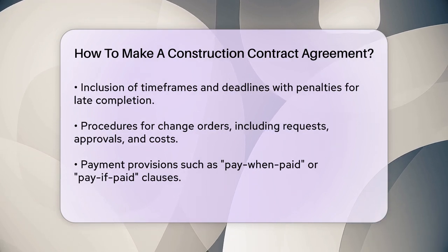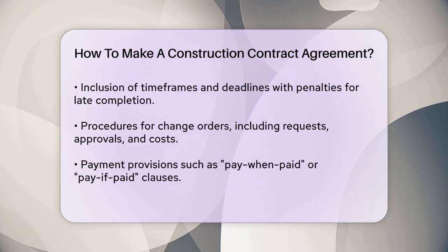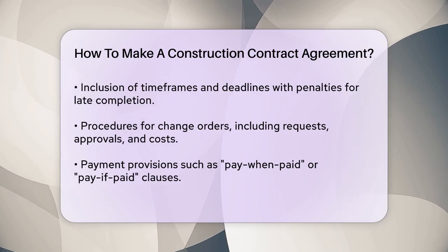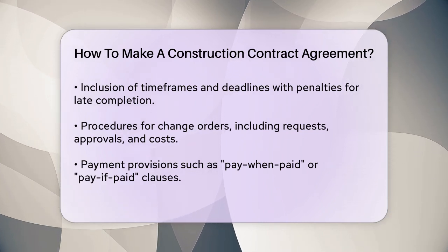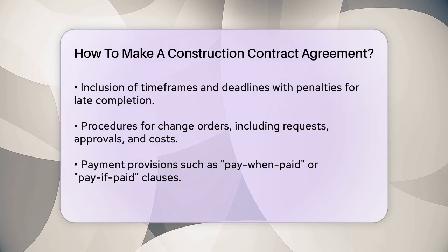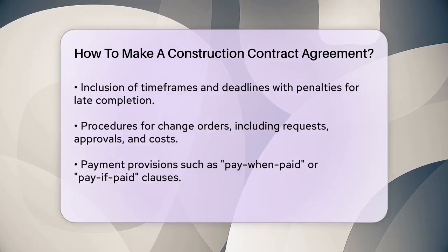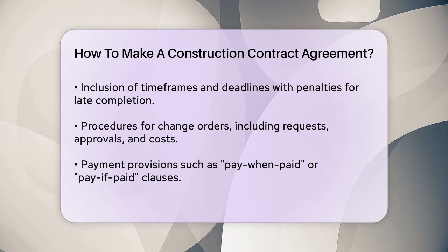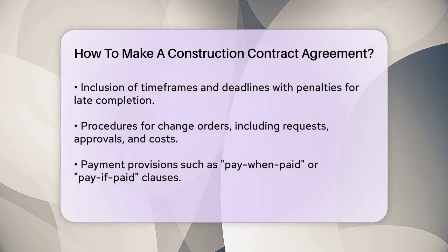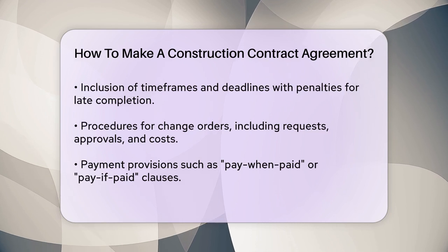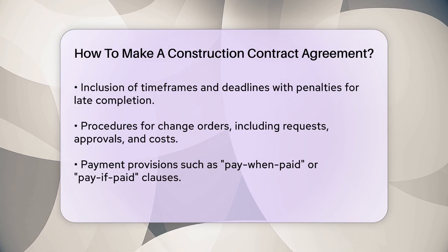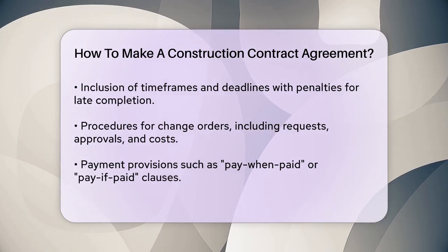Timeframes and deadlines are crucial. The contract should specify the expected completion date and account for any potential delays. Penalties for late completion or other breaches of the contract should also be included to protect both parties. Change orders are another important consideration. These are procedures for handling changes to the original scope of work. The contract should outline how changes will be requested, approved, and implemented, as well as any additional costs or time required.